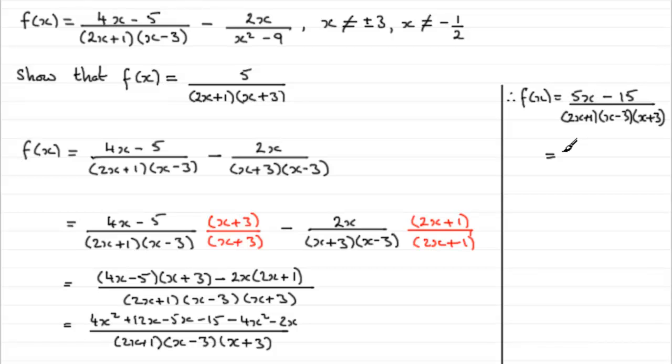So we can factorize the top now. Pull out 5 as a common factor. 5 bracket x minus 3. And then that's all divided then again by 2x plus 1, x minus 3 and x plus 3.